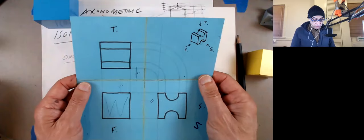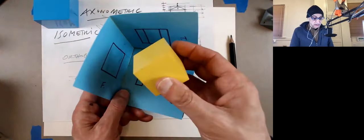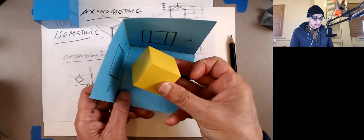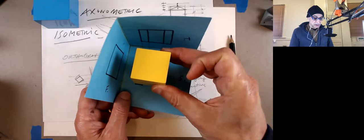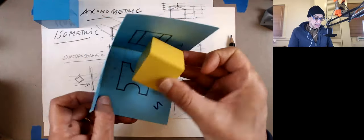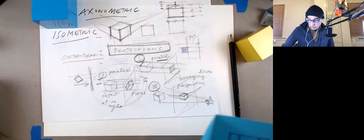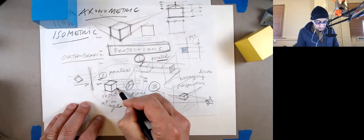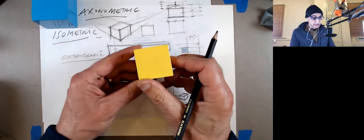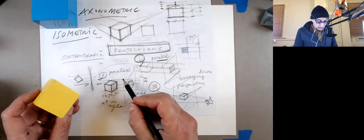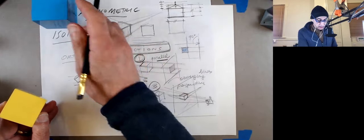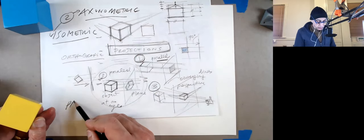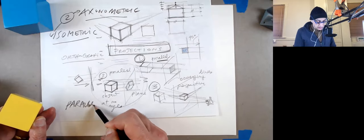The second kind is when we take this object and rather than making it parallel to the three planes, we twist it somehow — or keep the object straight and twist the planes. The two are equivalent. What we get is a representation where we start to see more than one side. That's called axonometric. The trick is that the lines are always parallel.